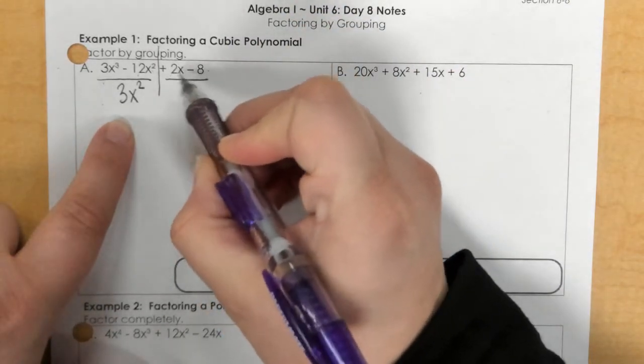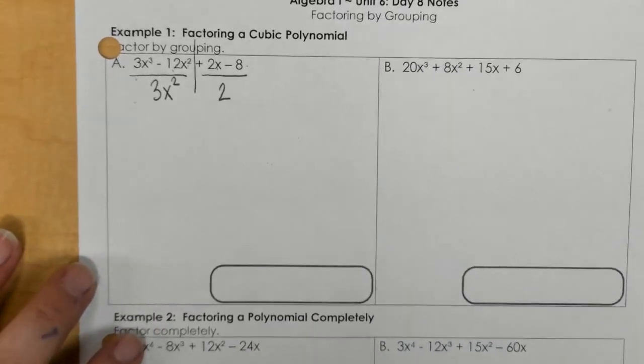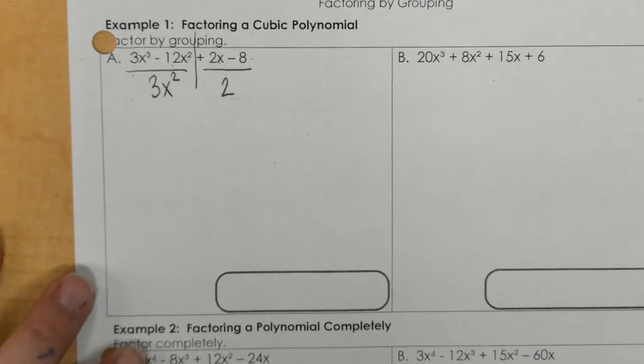Then on this side, what's the GCF of both of these, which is 2? Let me try to make that a little bit clearer, because it looks a little blurry.